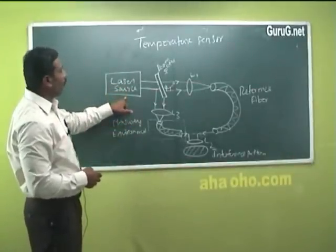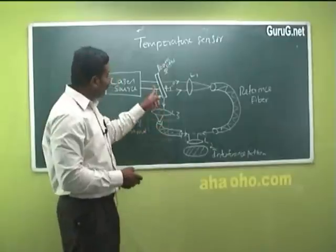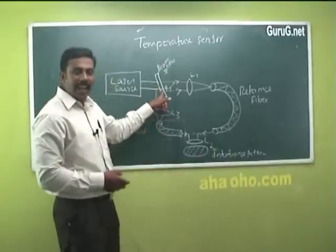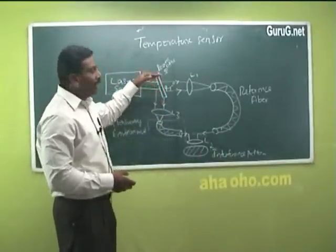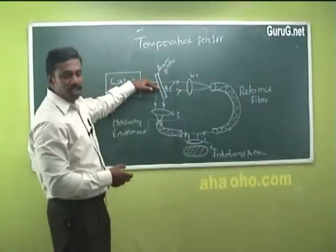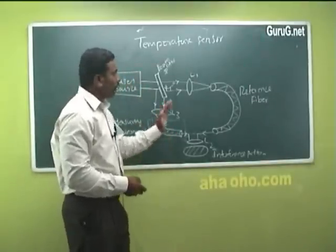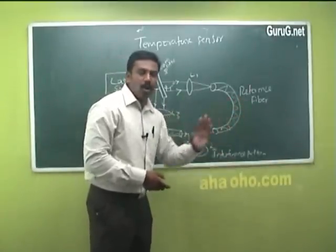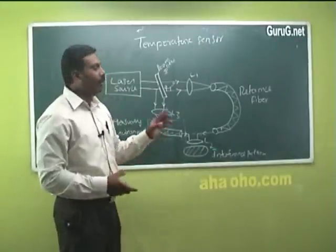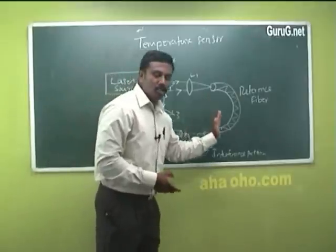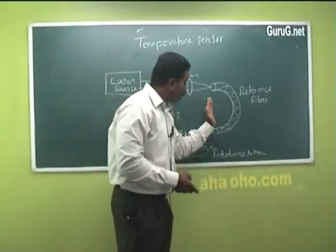This temperature sensor consists of a laser source. The output of the laser source is made to fall on a beam splitter, which is inclined at an angle of 45 degrees. At the beam splitter, the single optical source is divided into two. The system has two optical fibers: one is the reference optical fiber and the other is the measurable optical fiber.